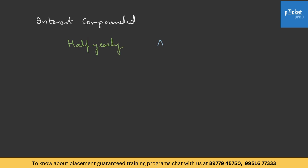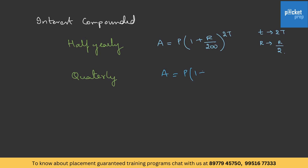When interest is compounded half-yearly, the formula for the amount is A = P × (1 + r/200)^(2t). Basically, time has been changed to 2t and the rate has been changed to r/2. If it is quarterly, A = P × (1 + r/400)^(4t). And if it is monthly, amount equals P × (1 + r/1200)^(12t). I hope you are able to make out how we are writing the formula.